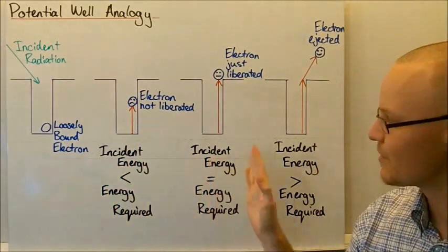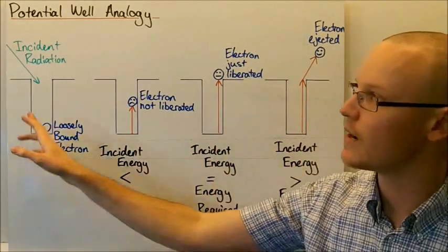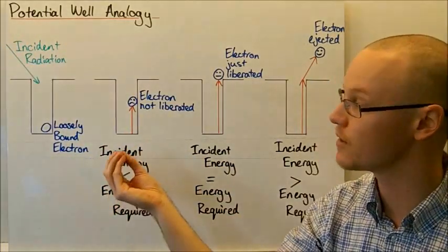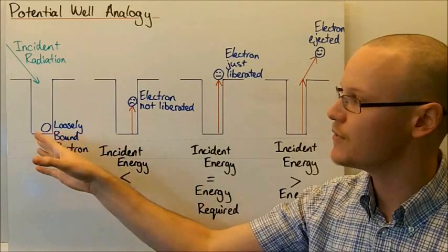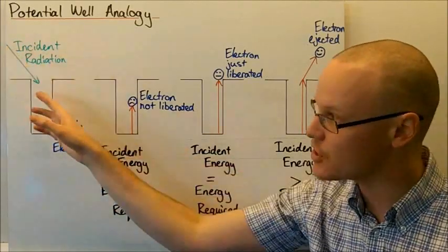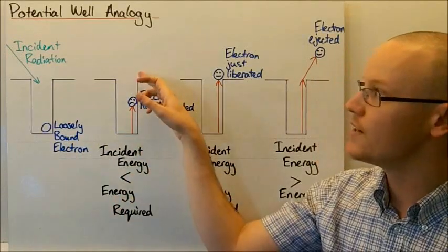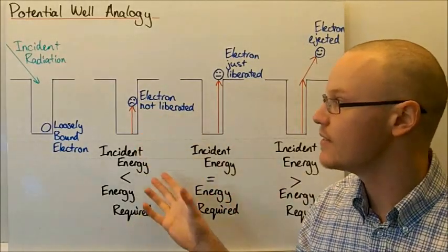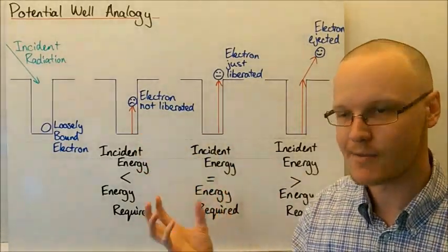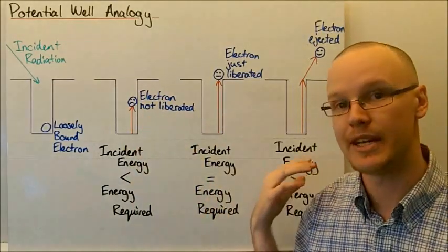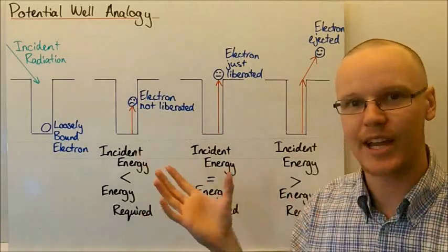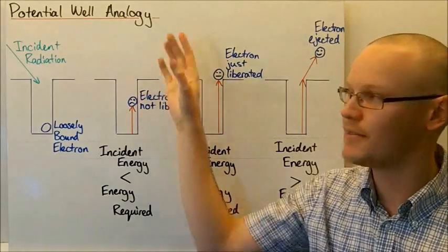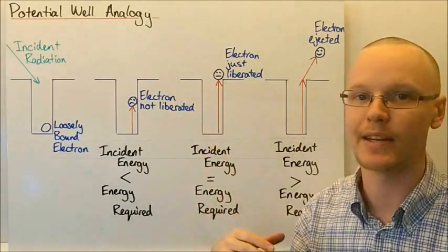There are three different scenarios that could occur once this photon of radiation comes in. If the incident energy is less than the energy required to remove the electron — to liberate the electron — then the electron won't be liberated. Some energy will be imparted to the electron, because energy can't be created or destroyed, but not enough to have it ejected from the metal.